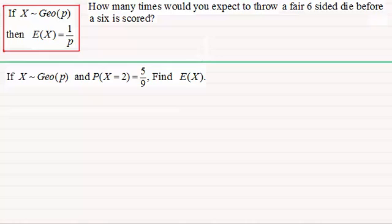Okay, welcome back then if you had a go. Well with the first one, how many times would you expect to throw a fair six-sided die before a six is scored? Well in an earlier tutorial I showed you that this kind of model can be modeled on a geometric distribution.